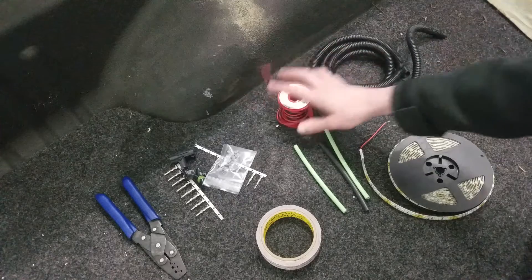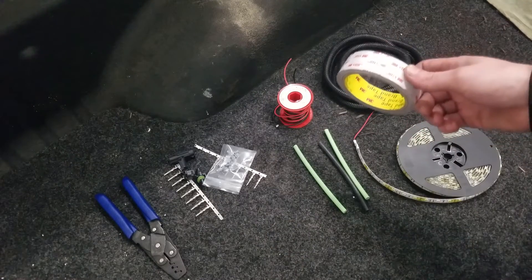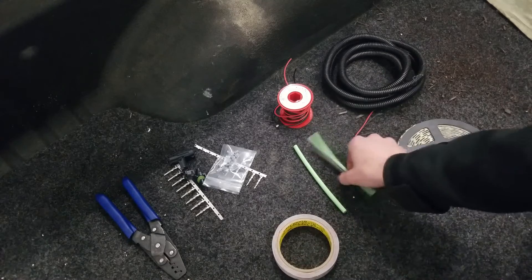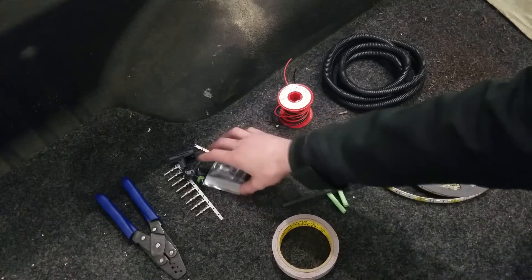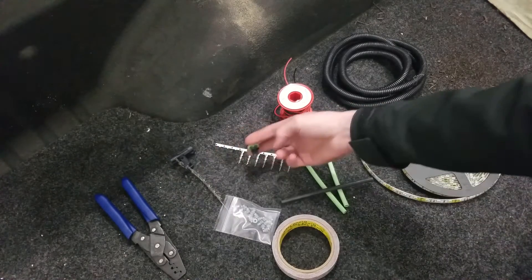some wire, some black wire loom to protect the harness, vinyl-backed adhesive tape, some shrink tube, and finally some weather pack connectors.